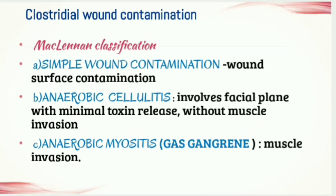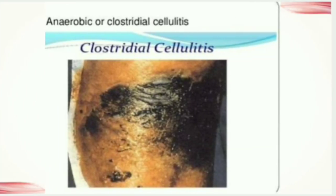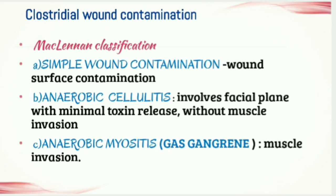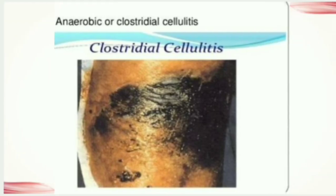Simple wound contamination involves wound surface contamination without invasion into the underlying tissues. Anaerobic cellulitis involves the fascial plane with minimal toxin release, without muscle invasion. The third type is anaerobic myositis, also known as gas gangrene, where muscle invasion occurs. We will discuss gas gangrene in detail later.